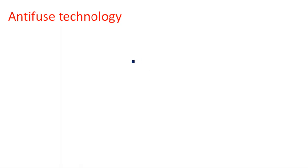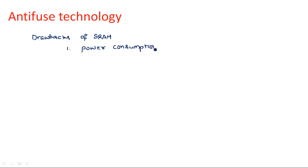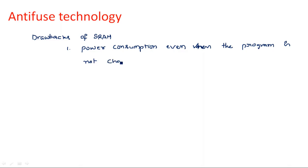We have some disadvantages with respect to the SRAM configuration. SRAM memory burns a noticeable amount of power even when the program is not changed. There are some important drawbacks with respect to the SRAM cell, which is why we are moving to another programming method like anti-fuse technology. The first drawback is power consumption — power is consumed even when the program is not changed.